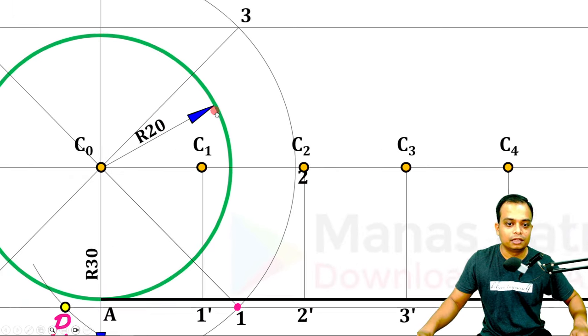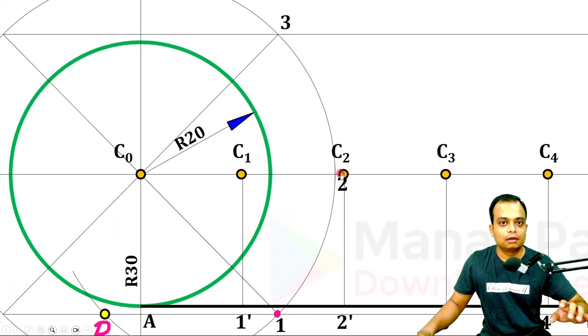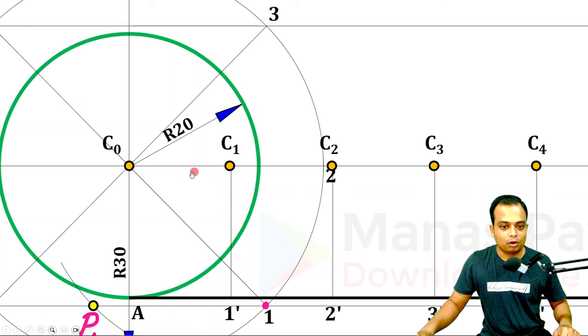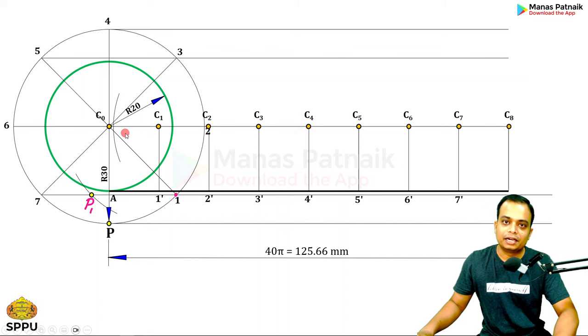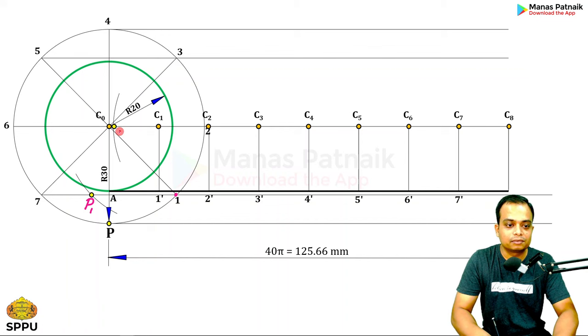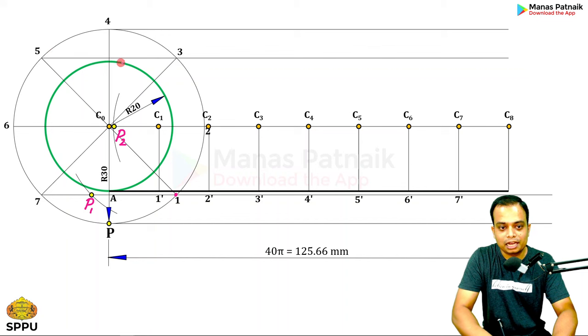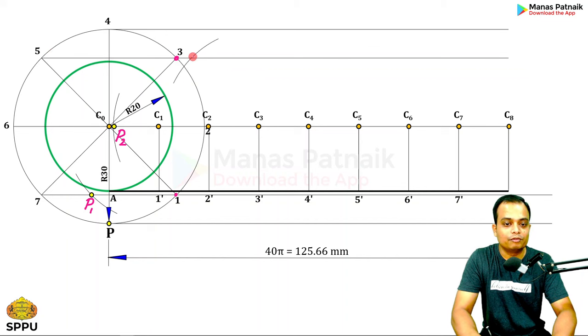Now you need to take C2 as the center. Once again, C2 as the center, and on a line passing through two, this is a line passing through two, you need to cut an arc again. So it will cut somewhere here. The radius is 30 millimeters. This is going to give you P2. Let me write this. Now with C2 are done, P2. Now with C3 as center, and on this line passing through three, you need to cut another arc. This is going to give you P3. Let me write this as P3.